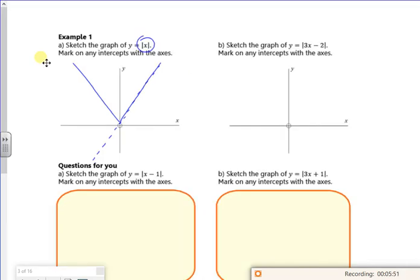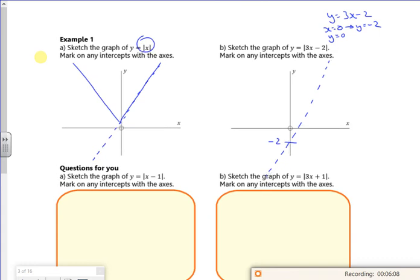3x minus 2. So the graph of 3x minus 2, I would expect to be something like that, crossing at minus 2. So when for y equals 3x minus 2, when x is 0, y is minus 2.